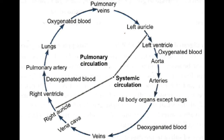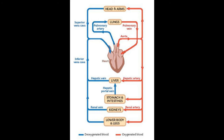Here we discuss two types of circulation — pulmonary circulation and systemic circulation. Observe the diagram: pulmonary circulation starts from the right ventricle where deoxygenated blood moves through the pulmonary artery to the lungs, then oxygenated blood returns through the pulmonary vein to the left atrium. Systemic circulation begins from the left ventricle where oxygenated blood is pumped through the aorta to all parts of the body, becomes deoxygenated, and returns through the veins and vena cava to the right atrium.